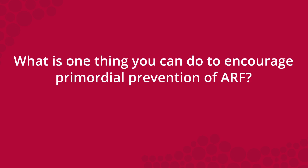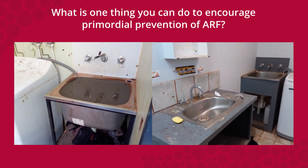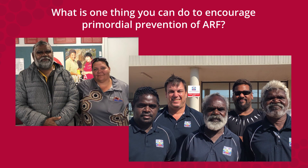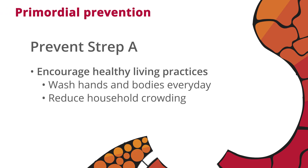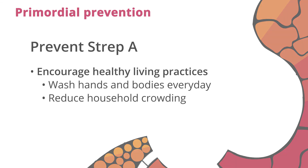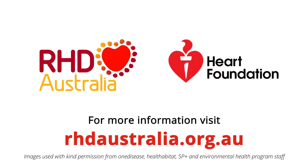What is one thing you can do to encourage primordial prevention of ARF? Where increased risk of ARF has been identified because of household crowding or poor household maintenance, contact housing and environmental health practitioners or community groups who can facilitate improved living conditions. Primordial prevention aims to prevent Strep A infections by encouraging healthy living practices, especially washing people and reducing household crowding. Visit the RHD Australia website for more information.